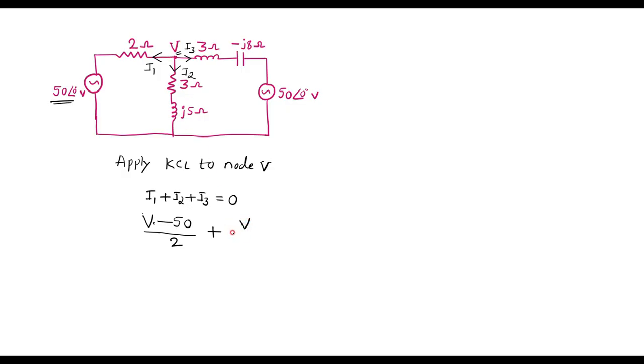And I3 is V minus 50 divided by 3 minus J8, is equal to zero.